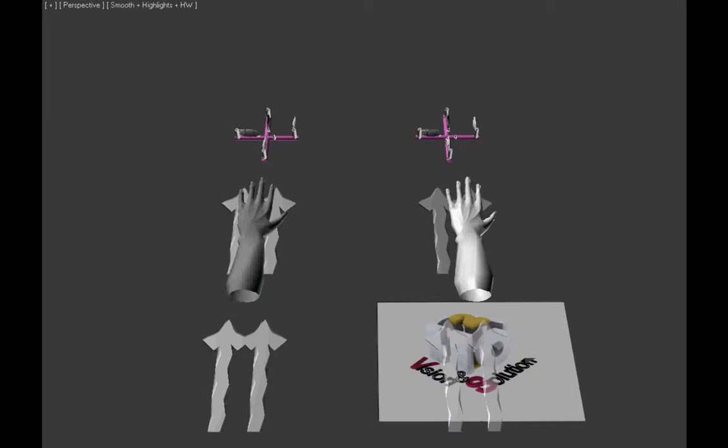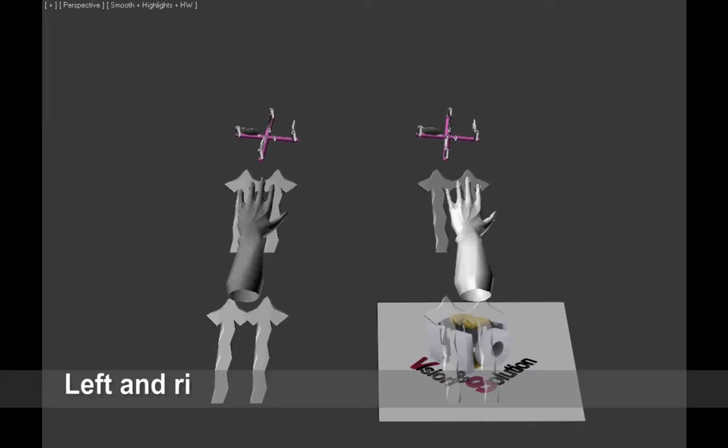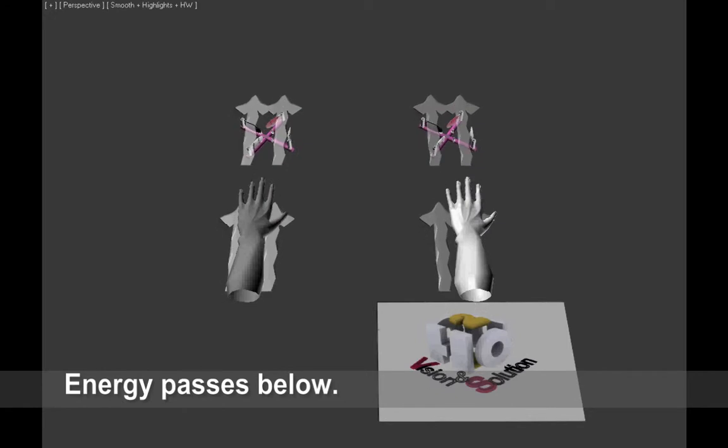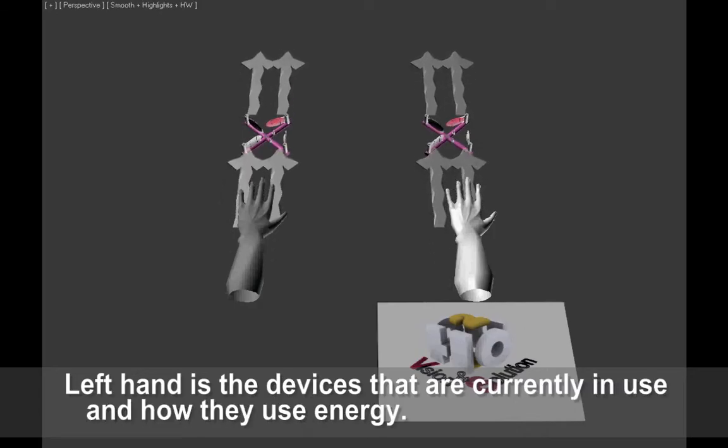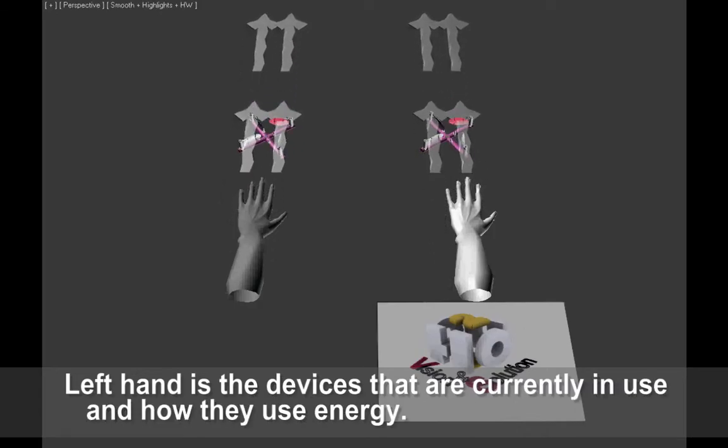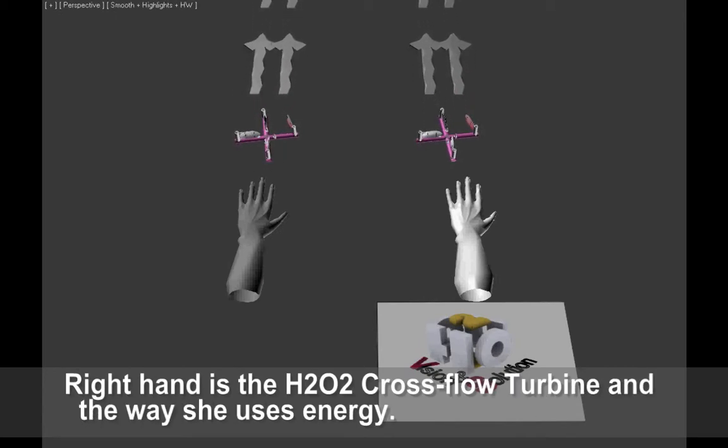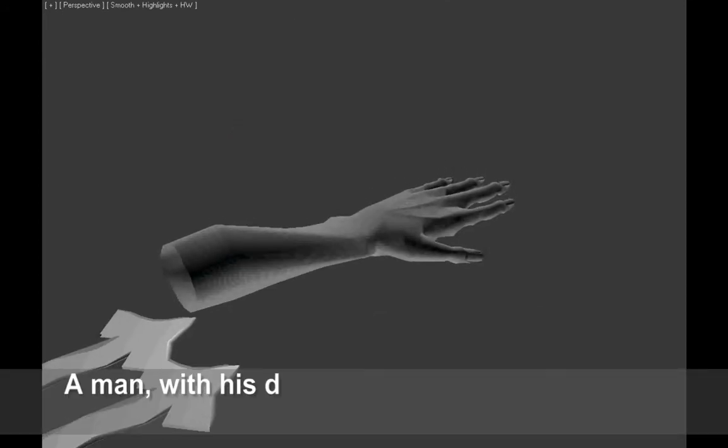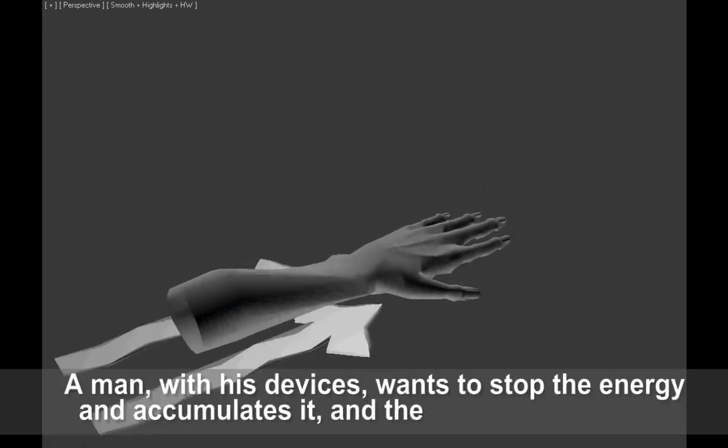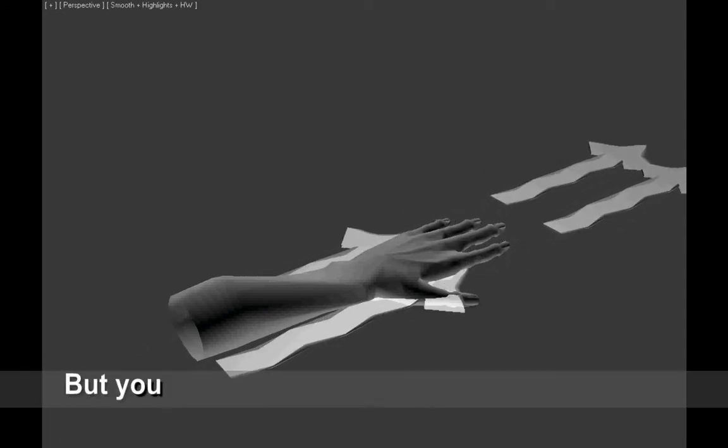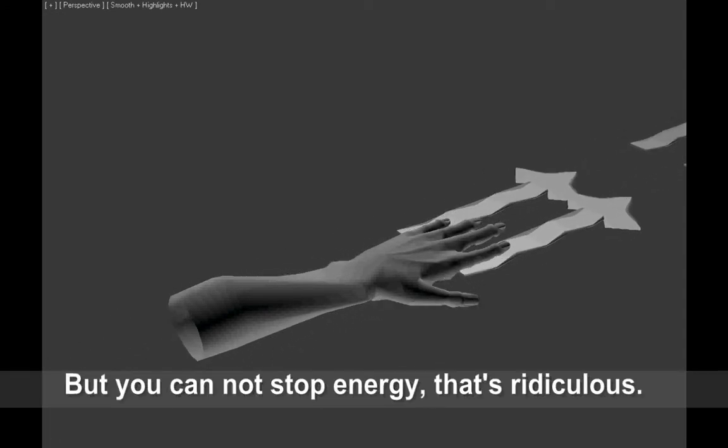Why our technology is so much better we will try to explain in the simplest possible way. Left and right we have 2 hands, energy passes below. Left hand is the devices that are currently in use and how they use energy. Right hand is the H202 cross flow turbine and the way she uses energy. A man with his devices wants to stop the energy and accumulates it and then use it. But you cannot stop energy, that's ridiculous.